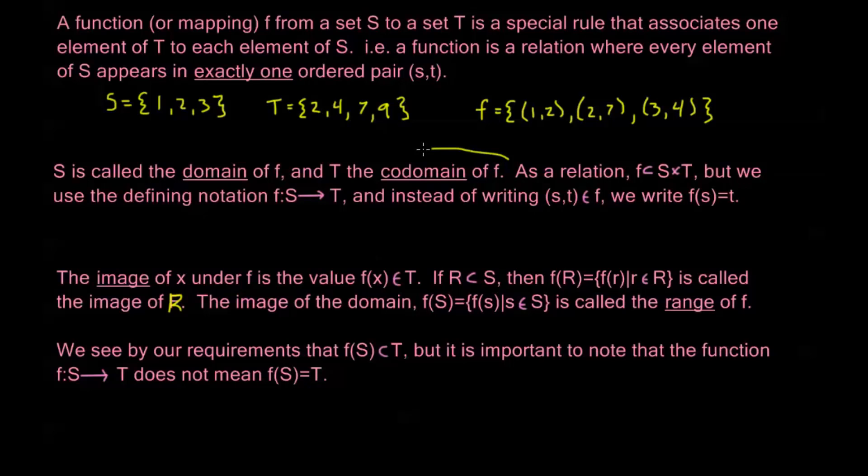So we have this idea of a codomain up here, and we have this idea of a range here. The range does not necessarily equal the codomain. Now, the codomain is always going to include the range. The range will always be a subset of the codomain, but they're not necessarily equal. It's a very important thing to keep in mind, and we can have lots of functions that only map to a part of our codomain.